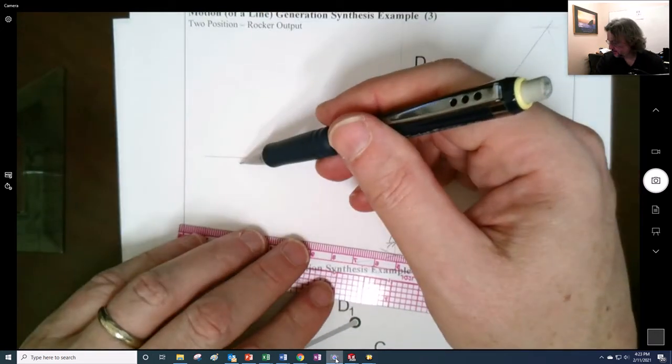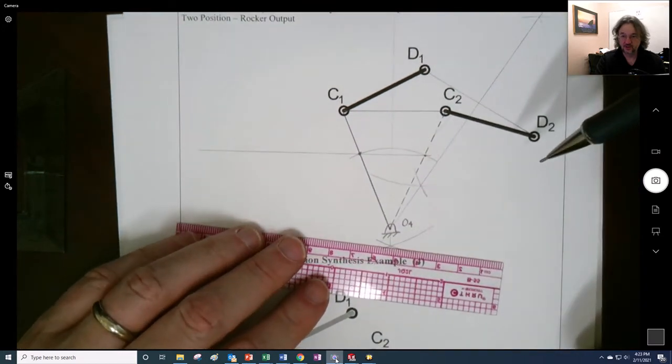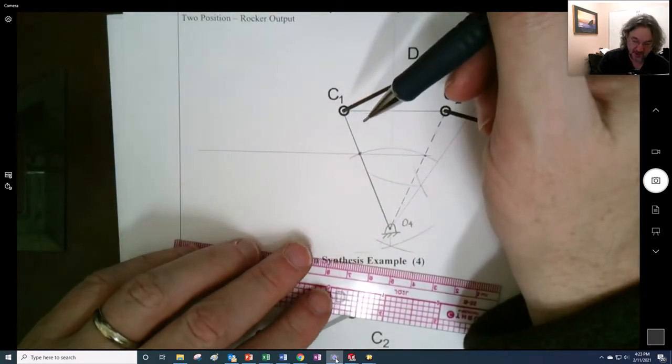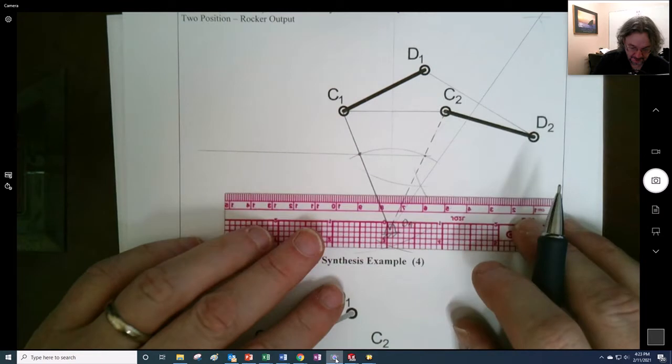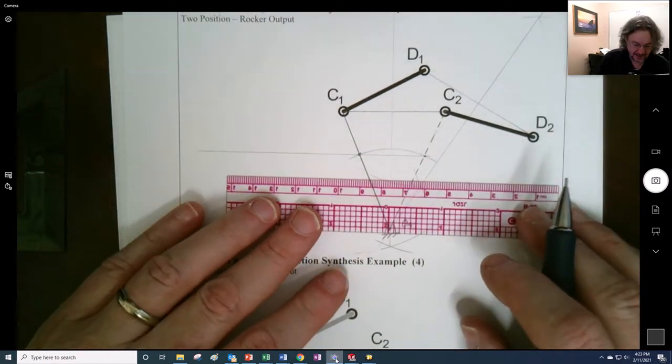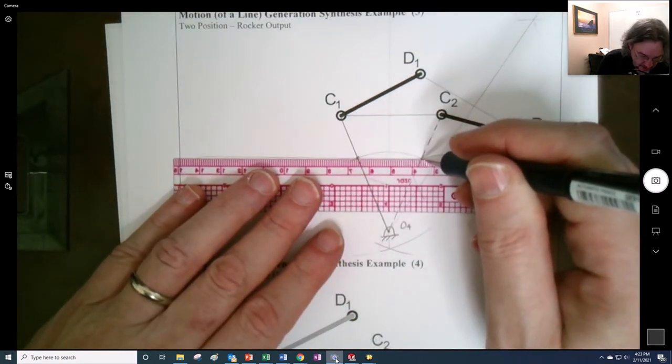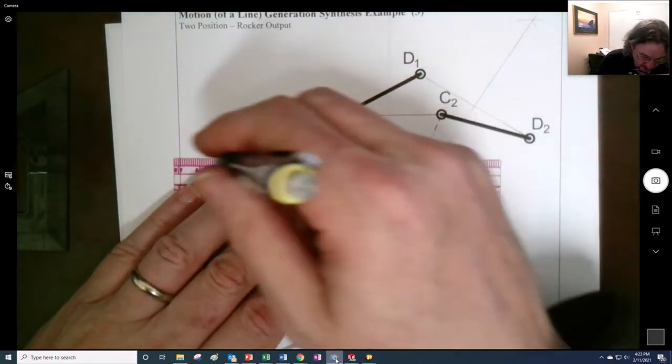And now this length is up to us to choose, but we really should check the Grashof relationship afterwards. And so, I think there is some guidance in the book as to how long or short that you can get to without having some Grashof issues.